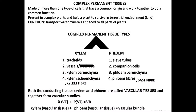Then comes the complex permanent tissue. Complex permanent tissues are made up of more than one type of cells, but their origin is the same. Complex permanent tissues can be xylem and phloem.